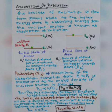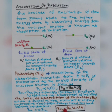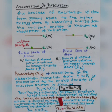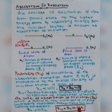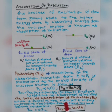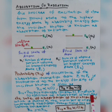The rate of absorption will be more when the photon density and number of atoms in the ground state is more. It means that photon density and number of atoms in the ground state both help to increase the rate of absorption. Here, B12 is the proportionality constant, also known as the Einstein coefficient of absorption radiation.